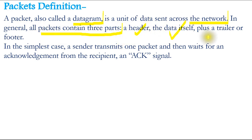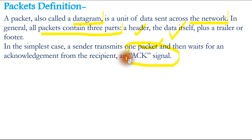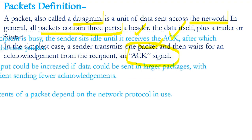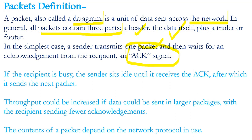The three parts are: one is header, second one is data itself, and the third one is trailer or footer. In the simplest case, a sender transmits one packet and then waits for an acknowledgement from the recipient — an acknowledgement signal that says yes, I have received this data or this much information.